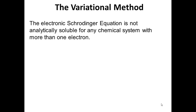We've spent our time so far this semester working through what we call analytical solutions to the Schrodinger equation. We define a Hamiltonian based on the chemical system of interest and, usually with French mathematicians helping us, we can go through and solve the resulting differential equation. But it turns out that the electronic Schrodinger equation is not analytically soluble for any chemical system that has more than one electron.